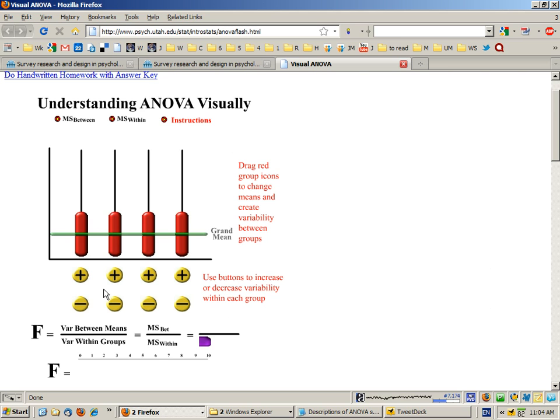We have here the F value which is our inferential test to indicate whether or not there's a significant difference between the groups. F is the ratio between the variance that is due to the between group effect compared to the variance within or inside the groups. At the moment there's no variance due to the grouping factor because there's no difference in the means.